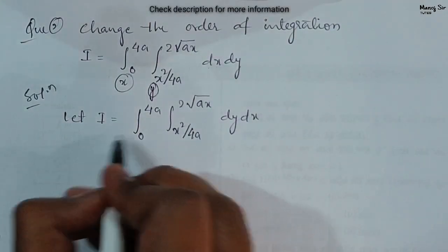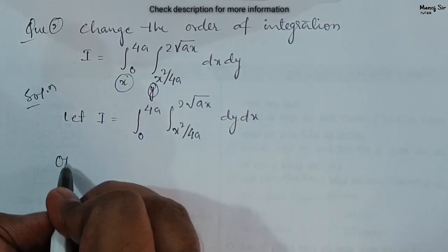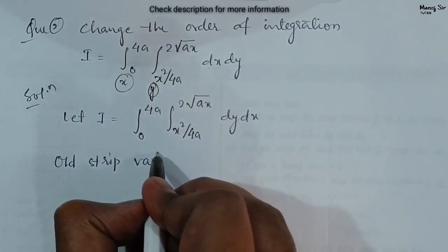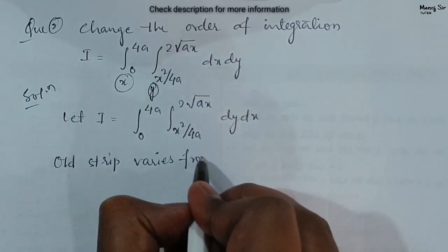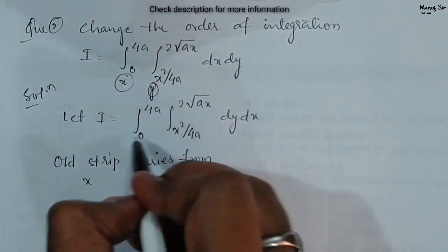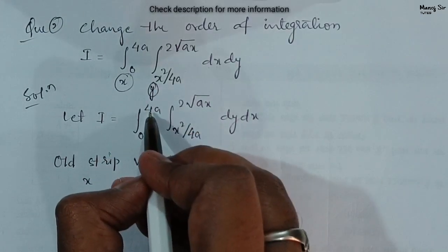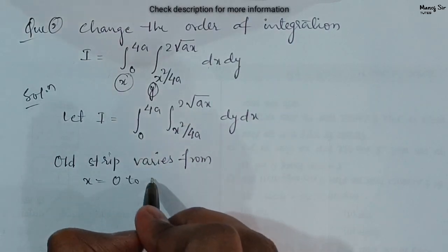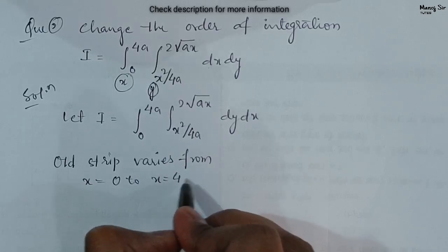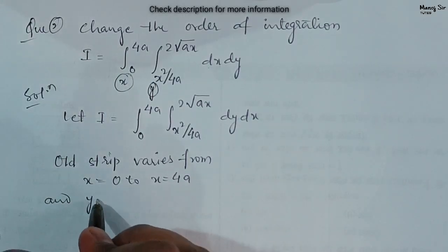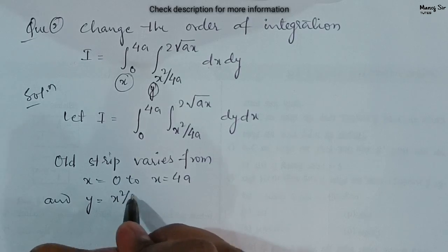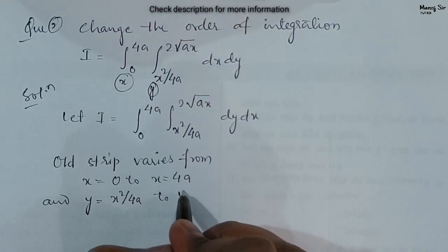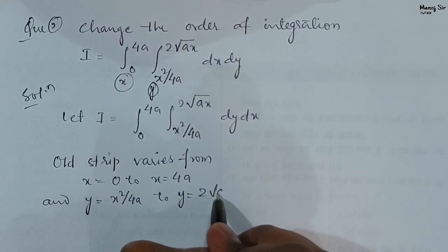Now we can see this is the limit of the old strip. The old strip varies as: x goes from 0 to 4a, then y goes from x² / 4a (lower limit) to 2√(ax) (upper limit).